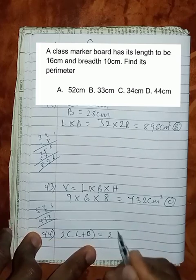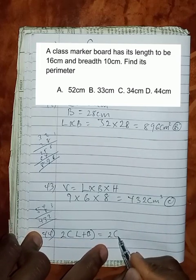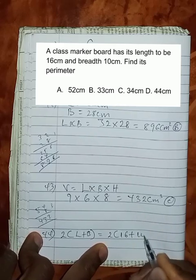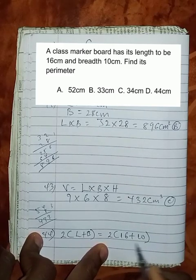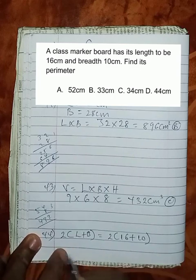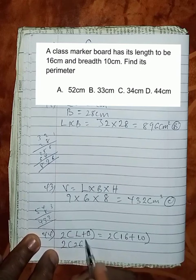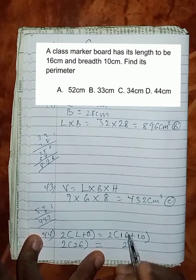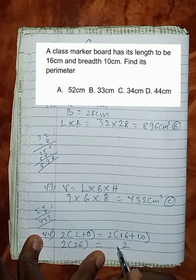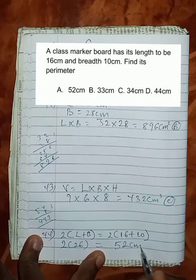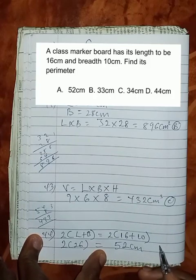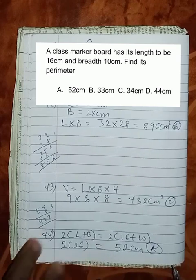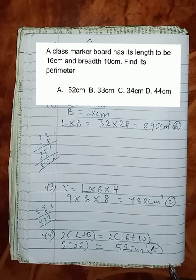The perimeter using formula will be 2 bracket length plus breadth. This becomes 2 brackets. We're told that the length is 16, the breadth is 10. So adding up these 2, we get 26. That would then be 2 bracket 26, which gives us 52 cm as the perimeter of the class marker board, which is option A.